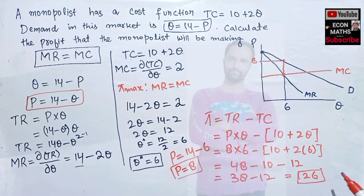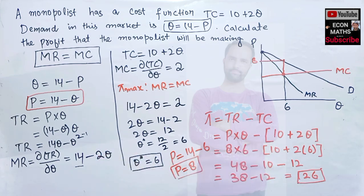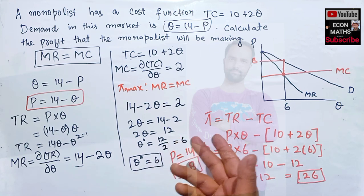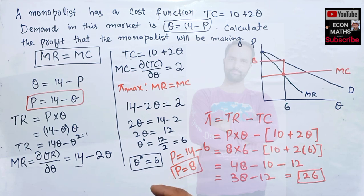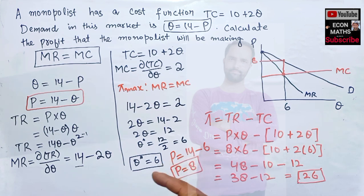The maximum profit this monopolist will earn is 26. It was a straightforward question — I solved it because a viewer specifically requested it. I hope this was clear. If you like these videos, please share them with your friends; that is the only motivation for me to keep going. I'm not charging anything for this — whatever I can do in my capacity as a student of economics, I'll try to solve questions for you and incorporate the mathematical aspects of economics.